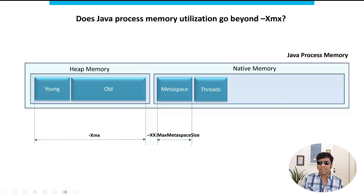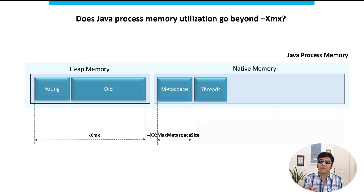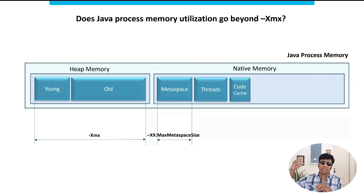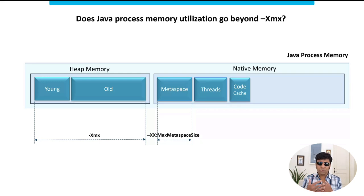After that, there is another region called threads. Threads are a very integral part — they are needed to execute your application. The memory for threads is stored in the threads region. After that, there is a region called code cache. The code that we write as developers is not the actual code that gets executed by the JVM at runtime. The JVM does a lot of optimizations for optimal performance, and that needs memory — which comes from the code cache region.